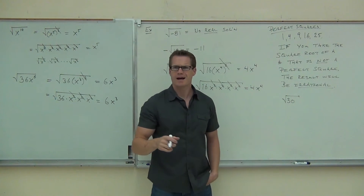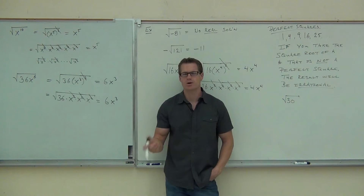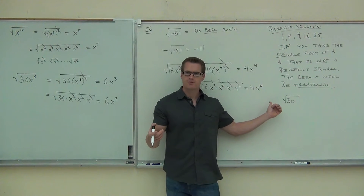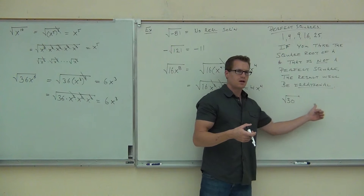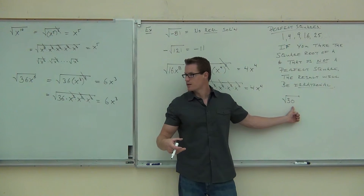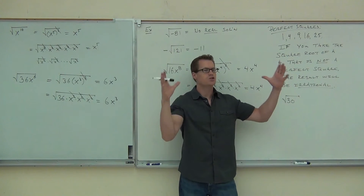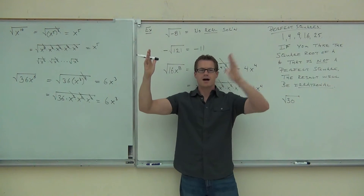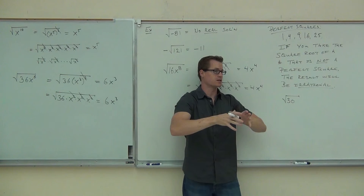Let's look at the square root of 30. I said this number is between 5 and 6. Do you know the square root of 25? Do you know the square root of 36? If 30 is between 25 and 36, then we know the square root of 30 has to be between 5 and 6. It's squeezing it between two bookends — square root of 25 equals 5, square root of 36 equals 6. If there's something between there, the answer has to be between 5 and 6.